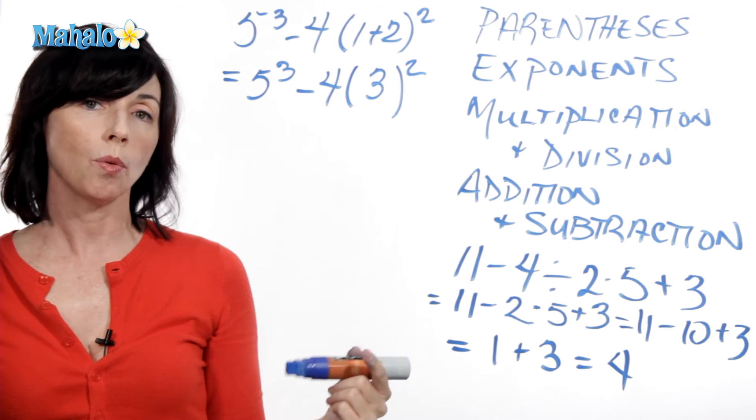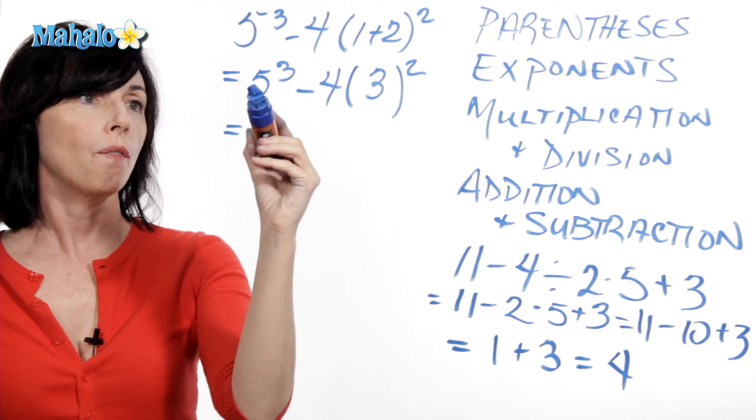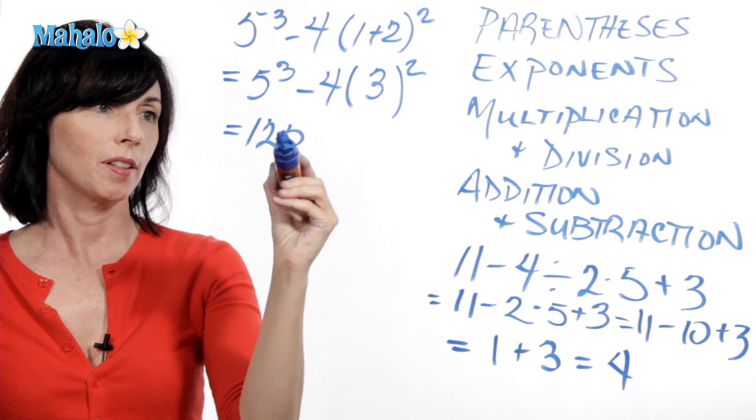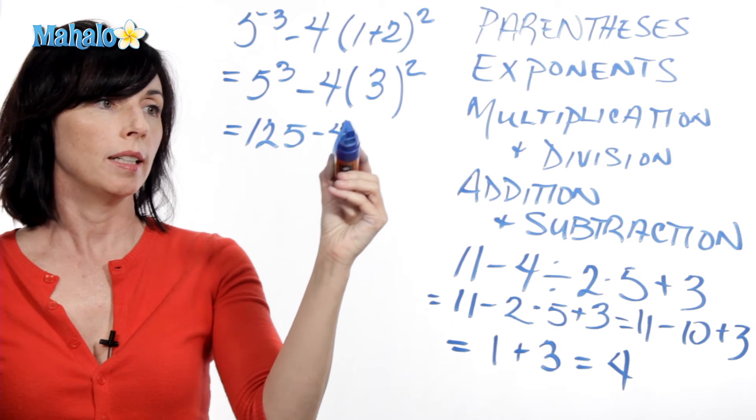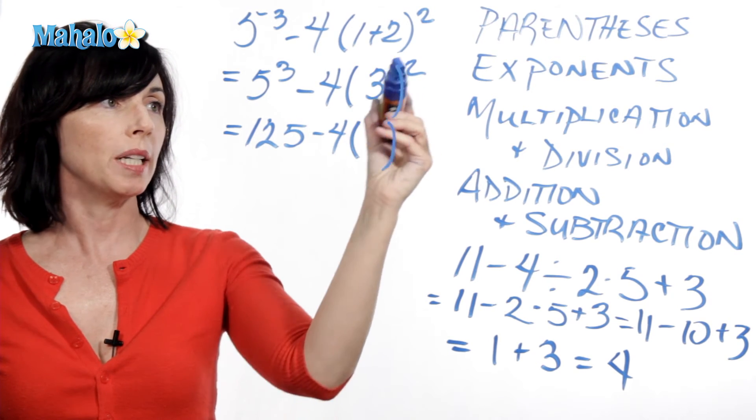So now we can go on to the next thing, which is exponents. So 5 cubed is 5 times 5 times 5, which is 125. Minus 4 times, I'm still going to leave my multiplication alone. 3 squared is 9.